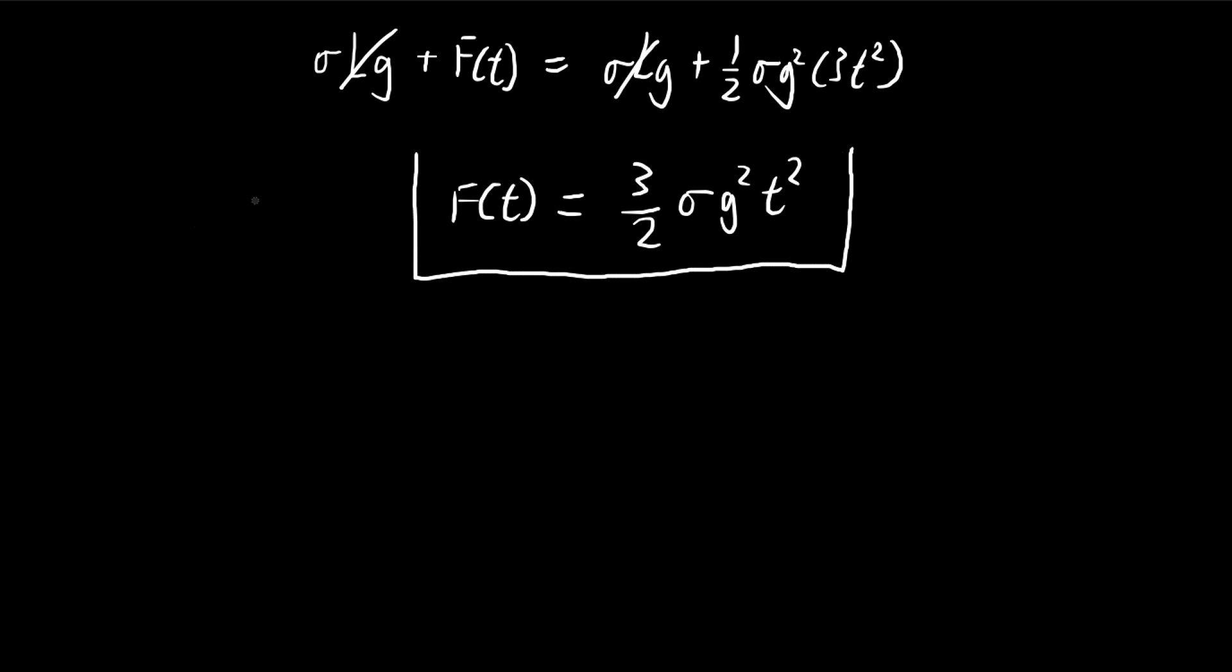Notice an interesting thing. So as the chain unwinds, how long does it take to unwind? The entire chain is L meters long. So let's use this equation again. The entire thing is L meters long. So how much time does it take to unwind? The time it takes for the entire chain to unwind is equal to the square root of 2L divided by g.